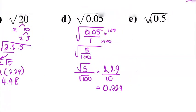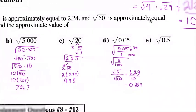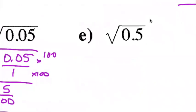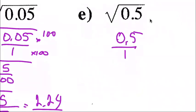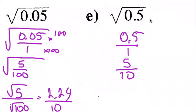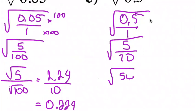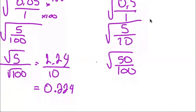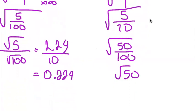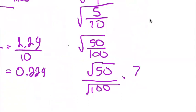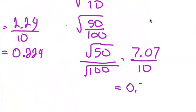For part e, square root of 0.5: converting, 0.5 is 5 over 10, but that's not a perfect square denominator, so we use the equivalent fraction 50 over 100. That gives the square root of 50 over the square root of 100. Since square root 50 is 7.07 and square root 100 is 10, dividing gives 0.707.